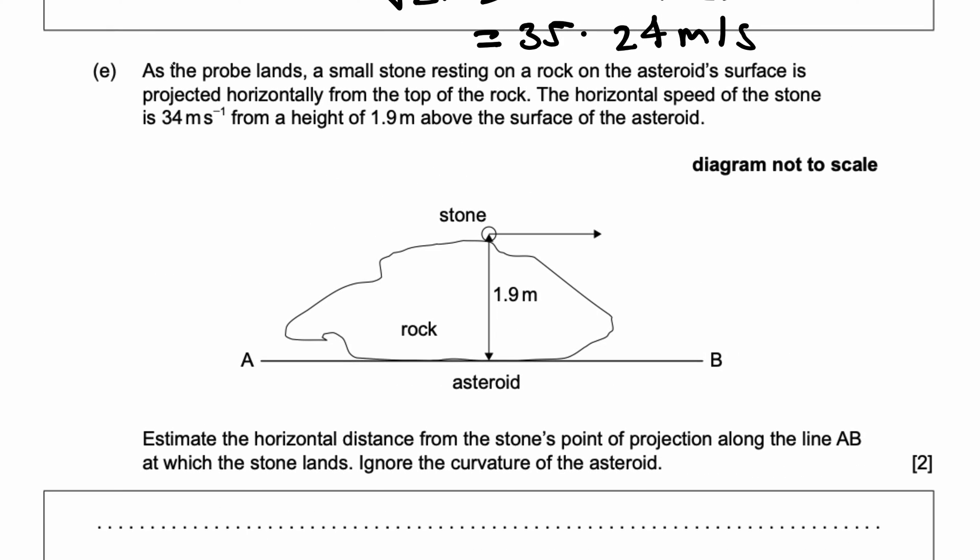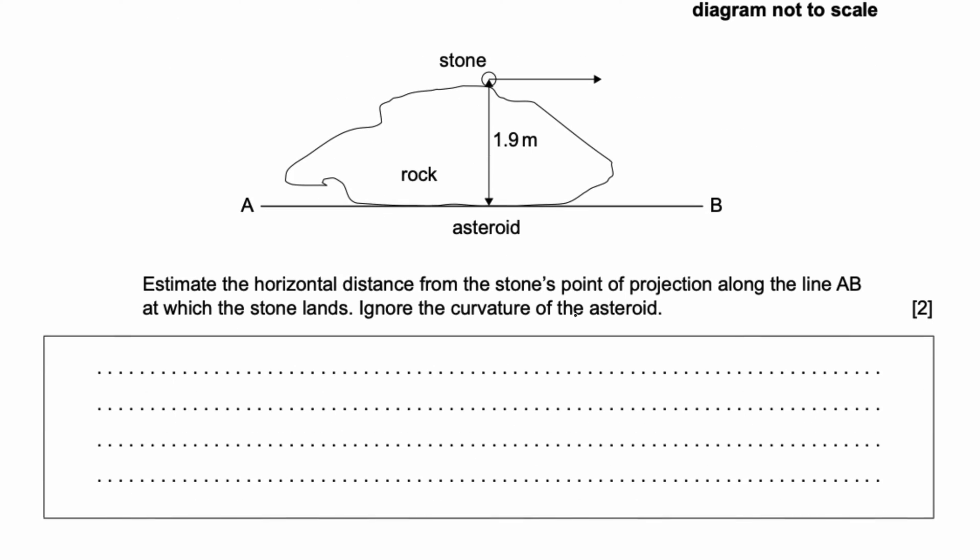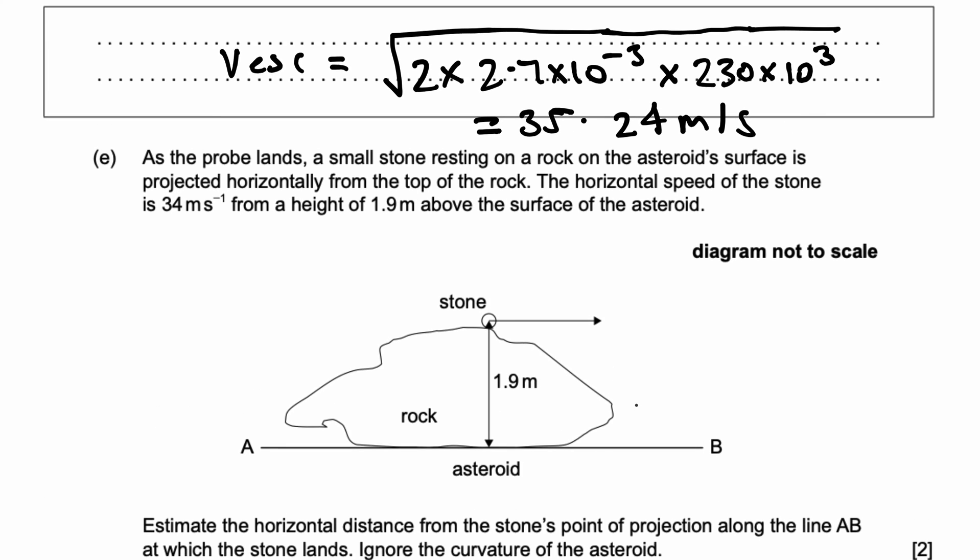And final part E. As the probe lands, a small stone resting on a rock on the asteroid surface is projected horizontally from the top of the rock. The horizontal speed of the stone is 34 meter per second from a height of 1.9 meters above the surface of the asteroid. Here's just a diagram to visualize the scenario. They're asking us to estimate the horizontal distance from the stone's point of projection along the line AB at which the stone lands. Ignore the curvature of the asteroid.